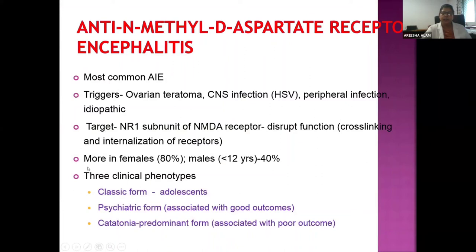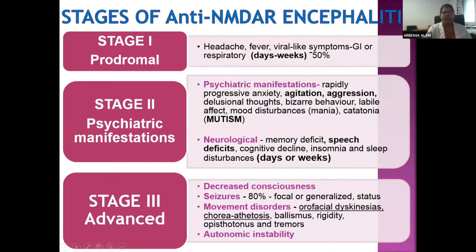Anti-NMDA receptor encephalitis is commonly seen in females, in about 80% of cases. In children under 12 years of age, male predominance increases to about 40%. There are generally three clinical phenotypes: the classic form, the psychiatric-predominant form — which has good outcomes — and the catatonia-predominant form, where the patient is immobile, mute, and indifferent, which has a very poor outcome.